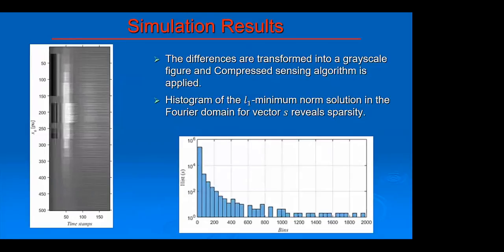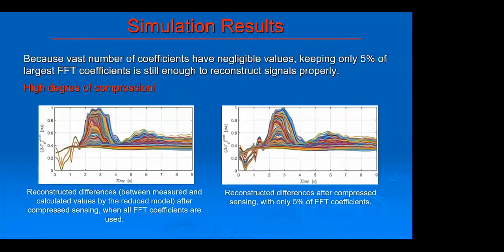These differences were then transformed into a grayscale figure and we solved the minimization problem in compressed sensing. Down here, you can see that many coefficients actually have very small or negligible values. The idea is that we can just ignore them, not use them, and keep only, for instance, 5% of the highest values and still be able to reconstruct signals properly. And this indeed is the case, as you can see.